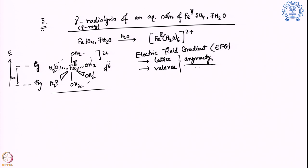Iron(II) is a d⁶ system. In the high-spin configuration, electrons fill as: 1, 2, 3 in T₂g, then 4th, 5th in E_g, and 6th back in T₂g. So E_g is symmetric but T₂g is asymmetric due to one extra electron in the lower level. This is why a valence EFG exists but no lattice EFG initially, and we expect a quadrupolar splitting from this valence interaction.